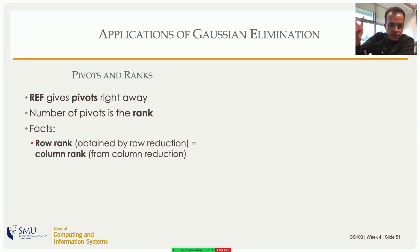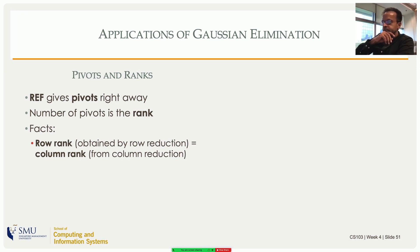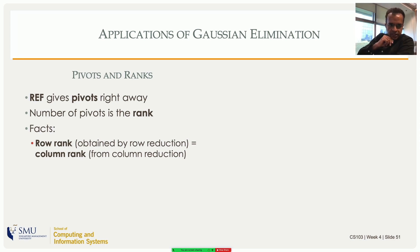We are only doing elementary row operations, but you could think of doing elementary column operations for finding pivots and ranks. However, column operations will not give you solutions to the same set of equations, because column operations change the solutions. There is a theorem, though, that states the number of pivots found using row operations equals the number found using column operations — the row rank equals the column rank.